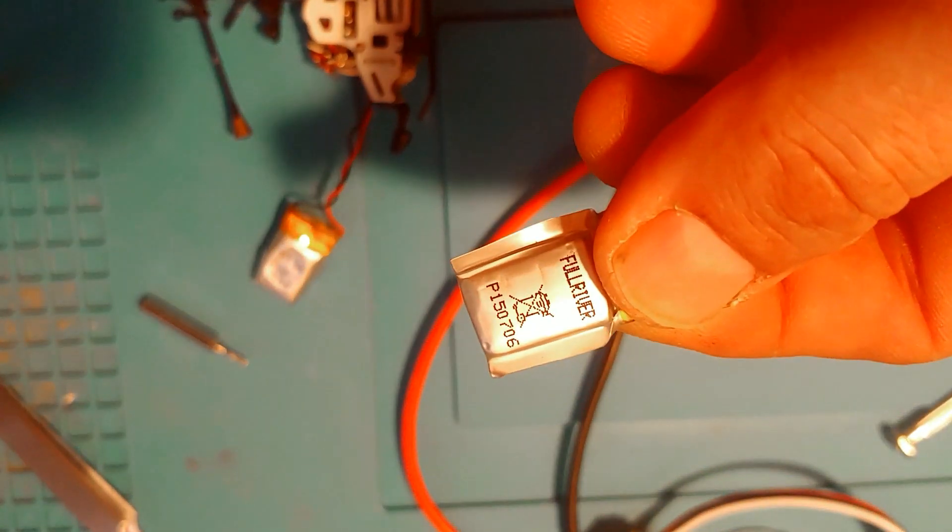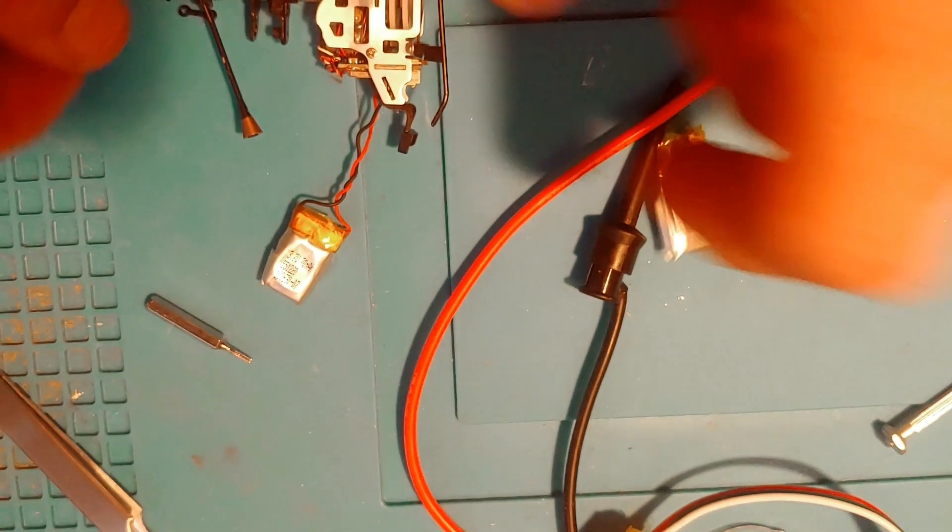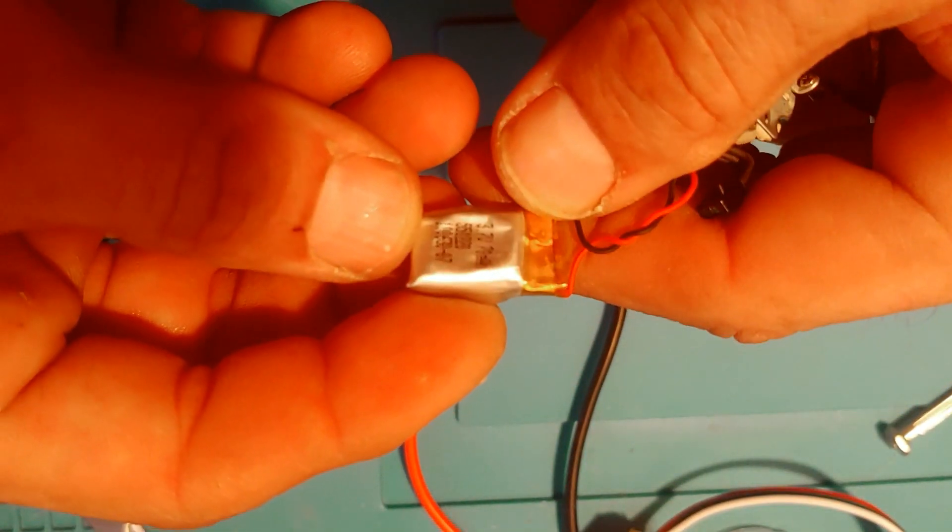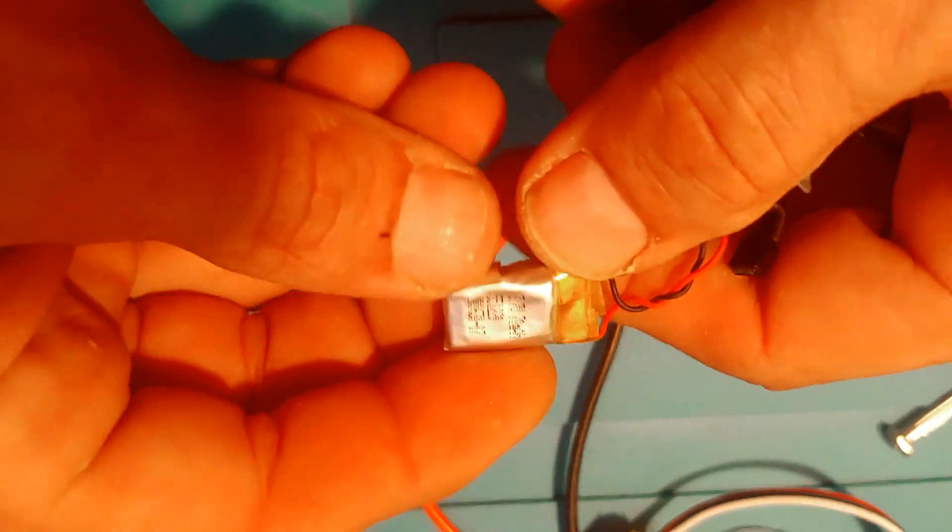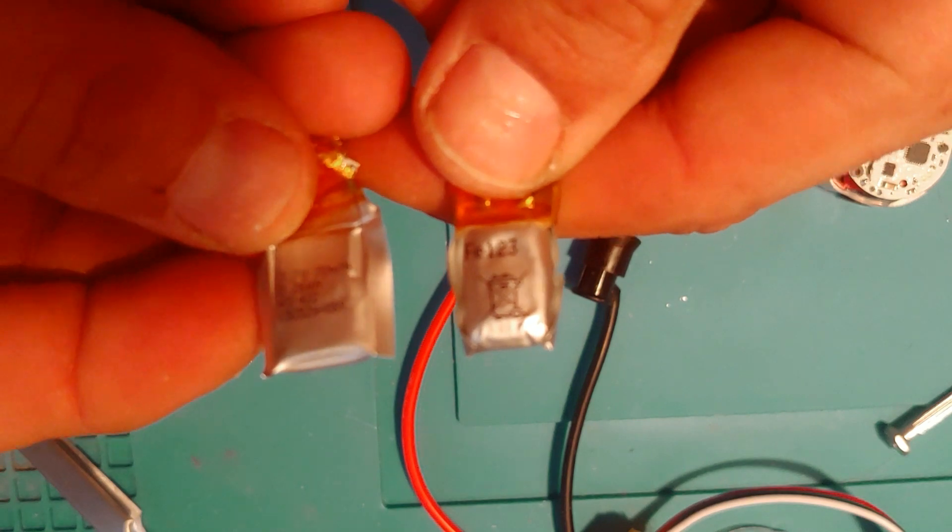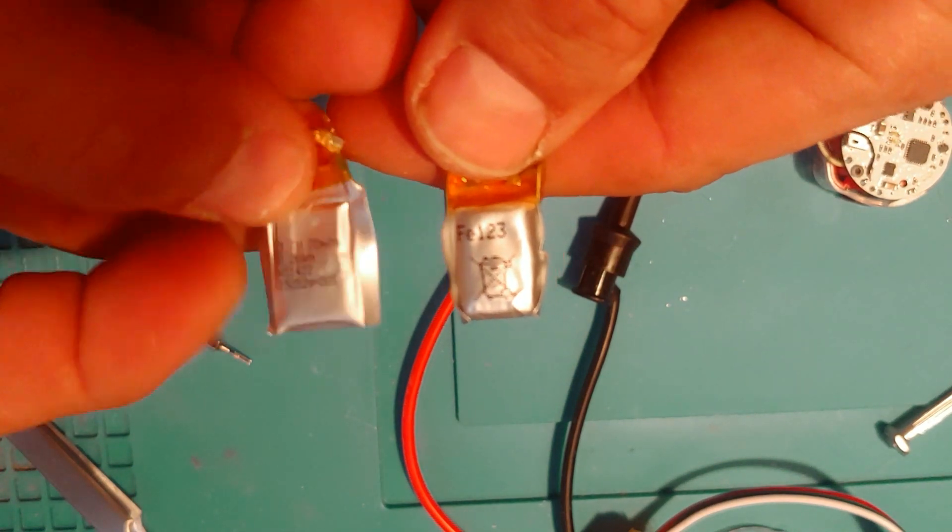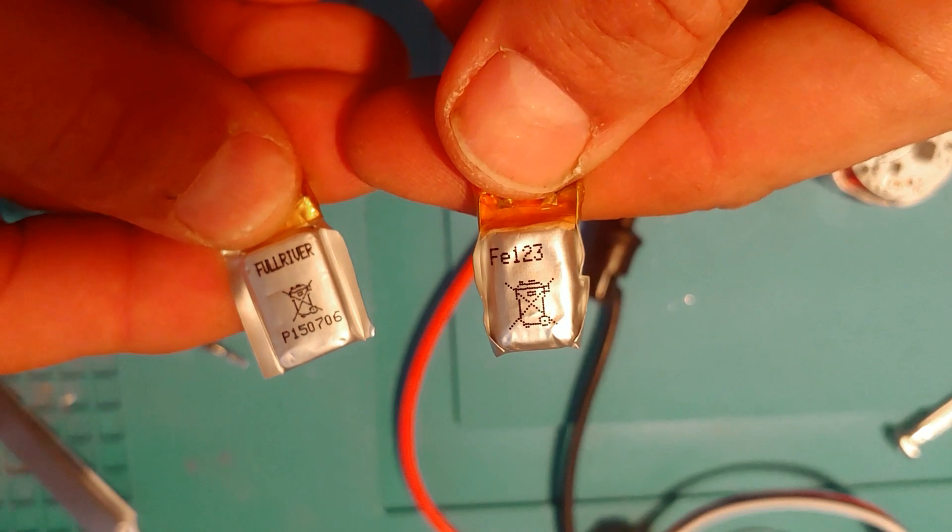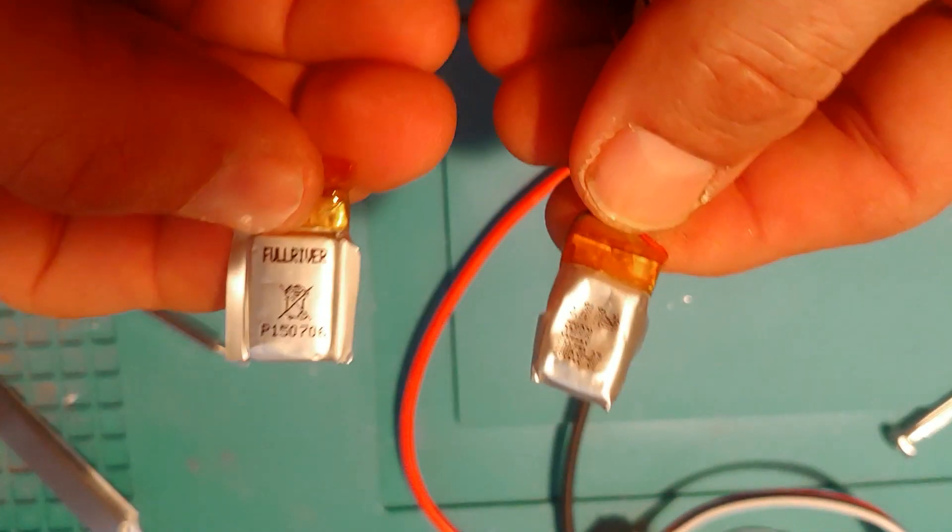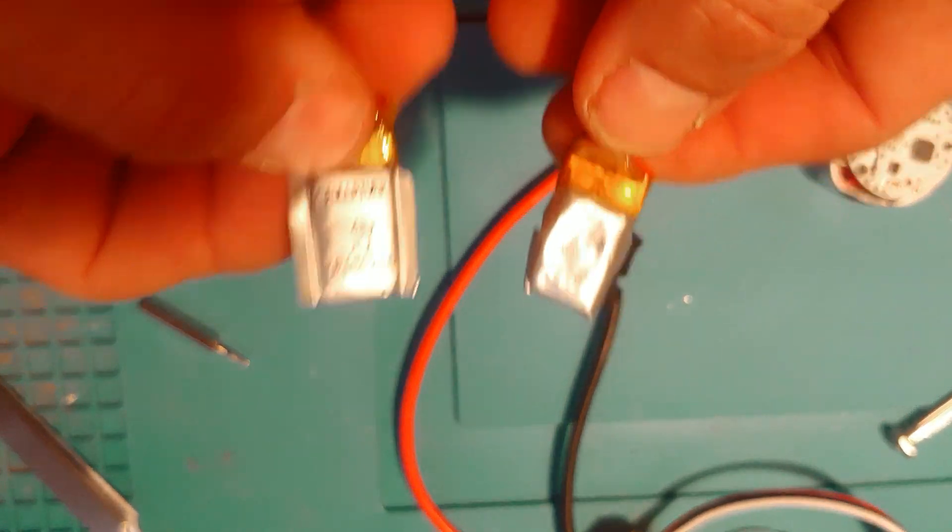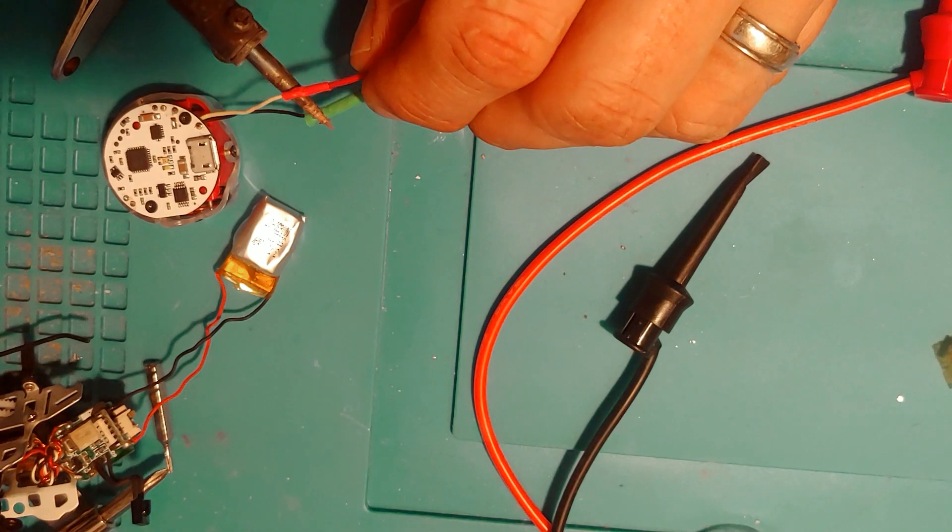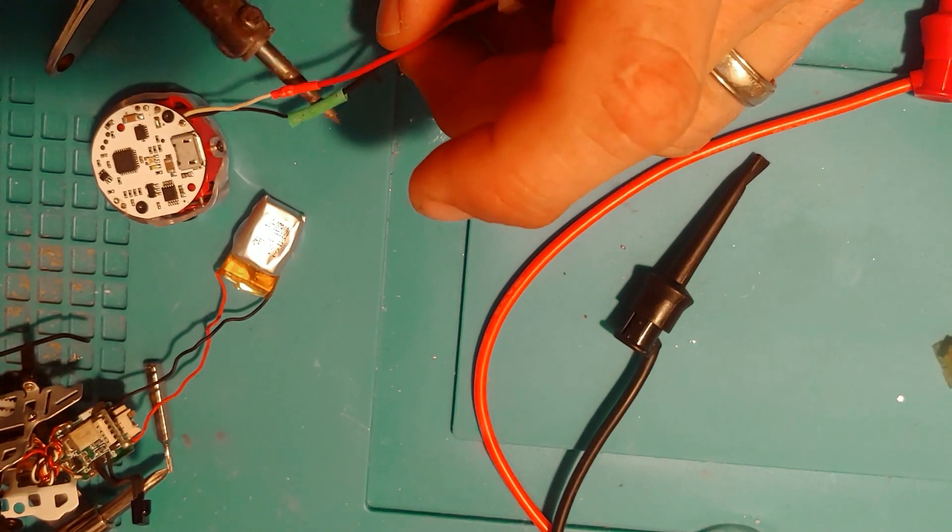So again, here you can see this Full River 70 milliamp hour battery that it came with in kind of a perfect size. And then incidentally, I wish I had found this other battery quicker, but I already found it after I had reassembled the whole thing while I was searching for a different battery. But it looked like this battery from the micro helicopter would have worked. I'm not sure about the charging board. I have to read up on that if you can charge these LIFE batteries the same way or on the same circuit as you can with a lithium polymer battery.